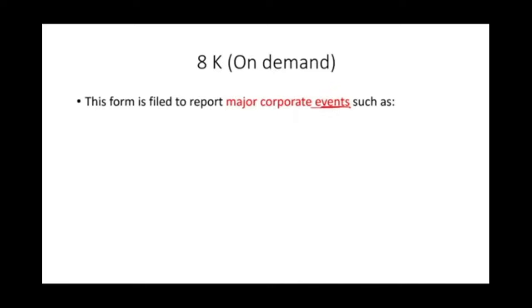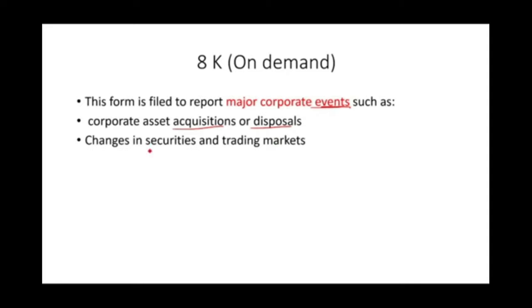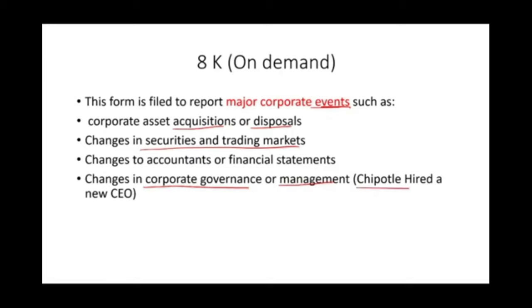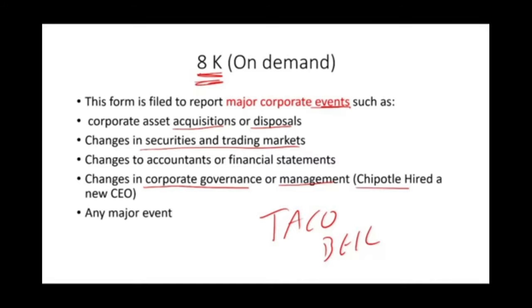Form 8K is filed on demand to report major corporate events — it could be filed every day or never, depending on what happens. Major corporate events include corporate asset acquisitions or disposals, changes in securities and trading markets, changes to accountants or financial statements, and changes in corporate governance or management. For example, when Chipotle hired a new CEO — the former CEO of Taco Bell — they filed an 8K to inform investors.